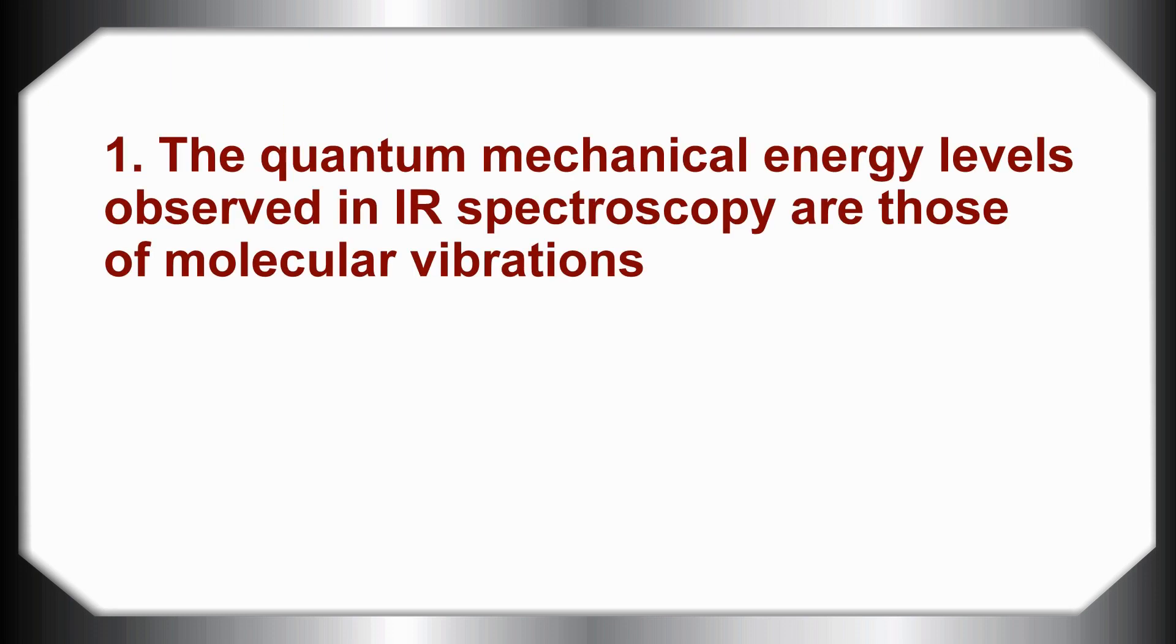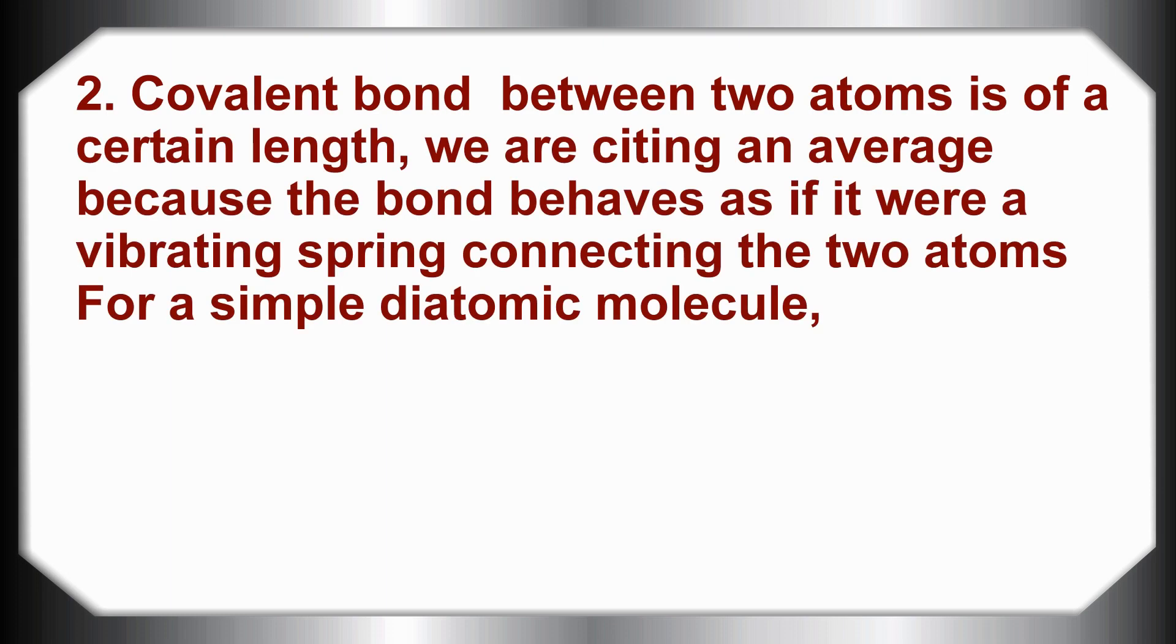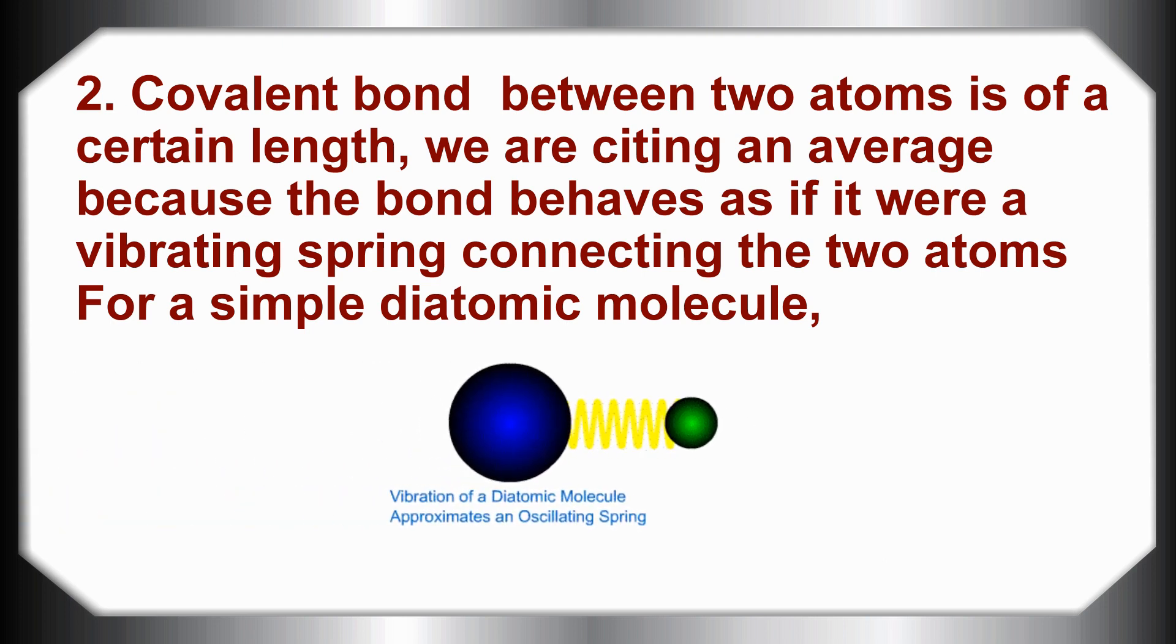Now we learn about the IR spectroscopic process. The quantum mechanical energy levels observed in IR spectroscopy are those of molecular vibrations. A covalent bond between two atoms is of a certain length, and we are citing an average because the bond behaves as if it were a vibrating spring connecting the two atoms. For a simple diatomic molecule, the bond will behave like this.